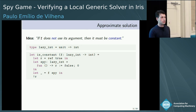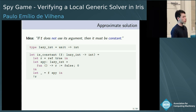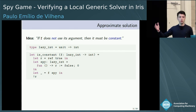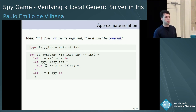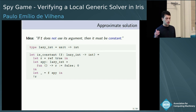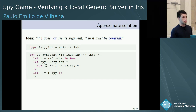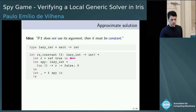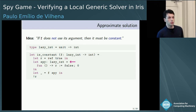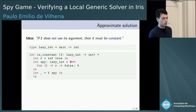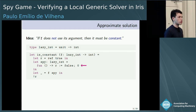If it does not call its argument, it cannot depend on it, so therefore it must be a constant function. Here I show you the implementation of the solution in the form of the function is_constant. In the beginning, we allocate a reference r, which is initialized with true. Then we define the lazy integer pi, which returns zero and also performs the observable effect of changing the state of the reference r to false.